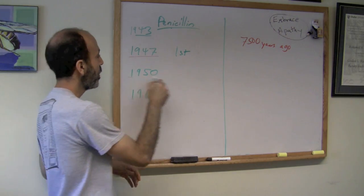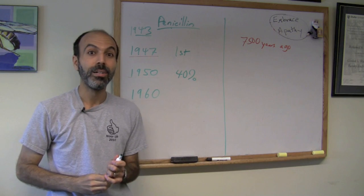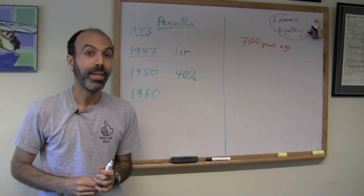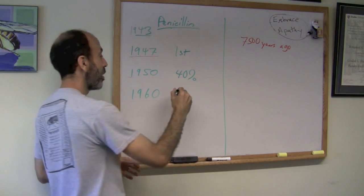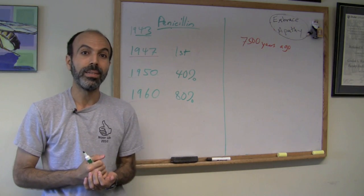So, a little bit of worry. 1950, 40% of staph isolates were resistant to penicillin. That's kind of scary, but even scarier is by 1960, 80% of staph isolates were resistant to penicillin.